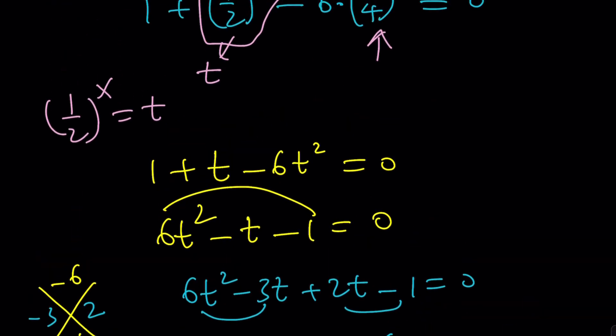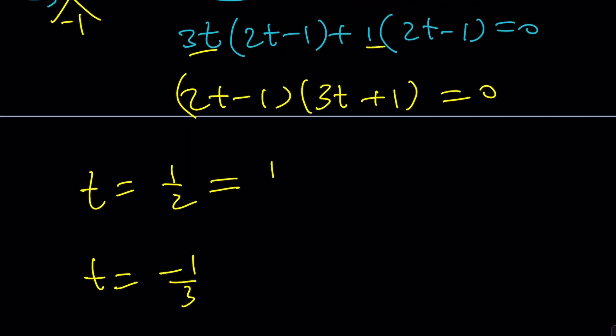From here we get two solutions. T equals 1 half and t equals negative 1 third. What is t? T is 1 half to the x. This gives us a really nice solution: x equals 1. That's a real solution.